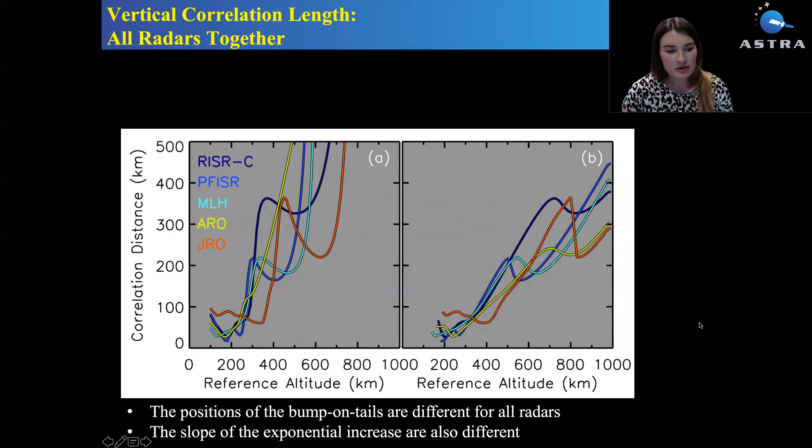To compare these distributions for different radars, I would plot them all in the same plot, but the color would represent different radar. You see that the slopes of exponential increase are different for different radars, as well as the position of this bump or tail.